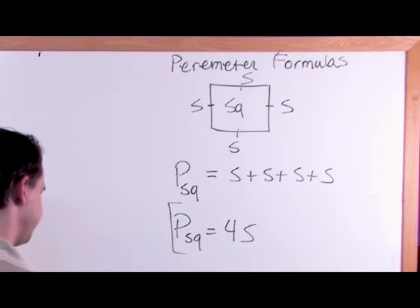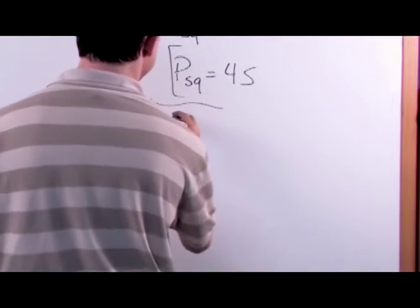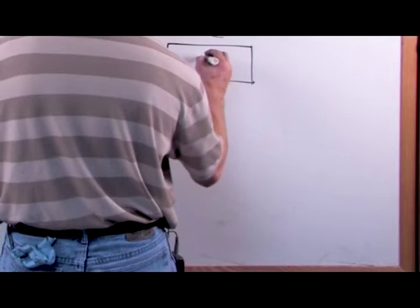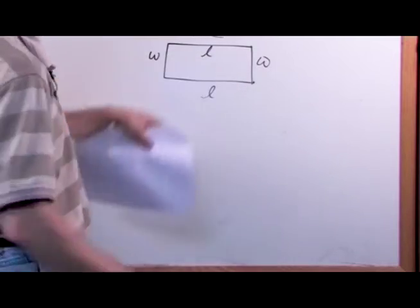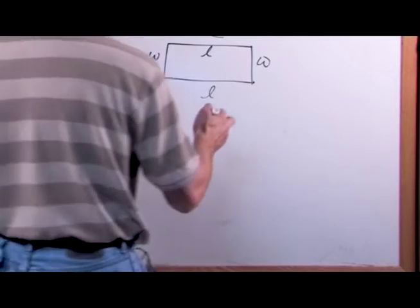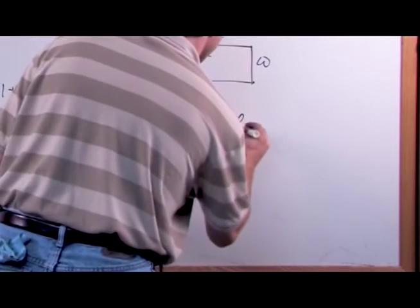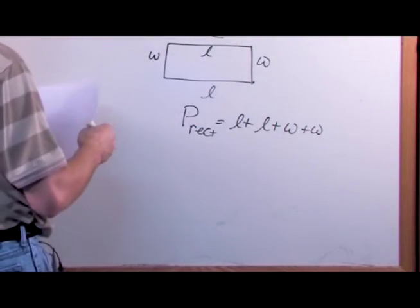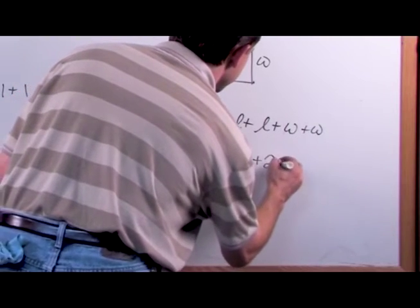Similarly, for a rectangle, this is the length L and this is the width W. Notice W equals W and L equals L, because in a rectangle opposite sides are equal. Then the perimeter of a rectangle is simply going to be L plus L plus W plus W — adding them up just like before — and this equals 2L plus 2W.